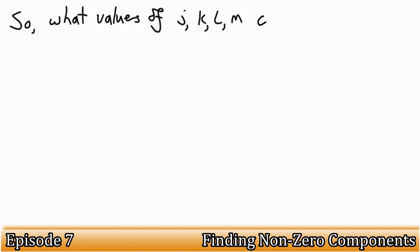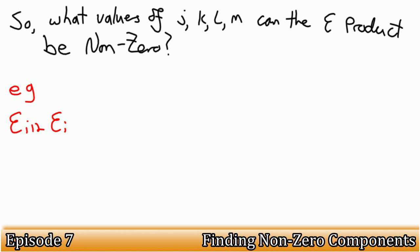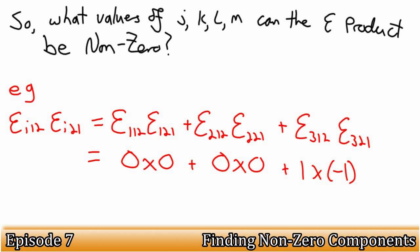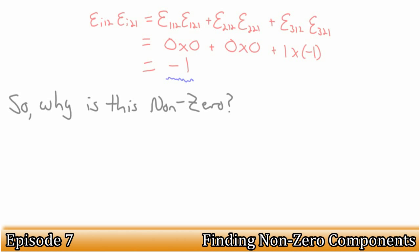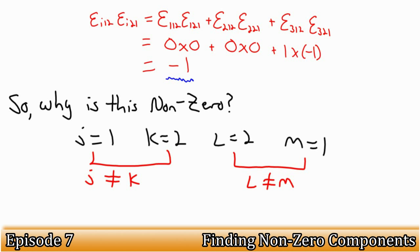So for what values of j, k, l, and m can the product be non-zero? Let's take the example epsilon i 1 2 epsilon i 2 1, is equal to epsilon 1 1 2 epsilon 1 2 1, plus epsilon 2 1 2 epsilon 2 2 1, plus epsilon 3 1 2 epsilon 3 2 1. So this is equal to minus 1. So, here we have a component that is non-zero. Why is this? We see that j is equal to 1, k is equal to 2, l is equal to 2, and m is equal to 1.